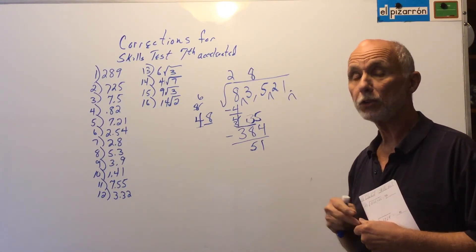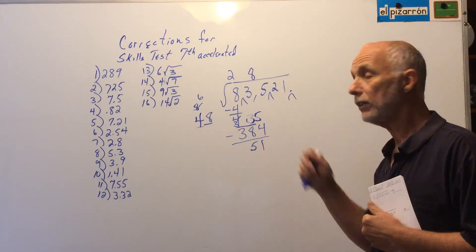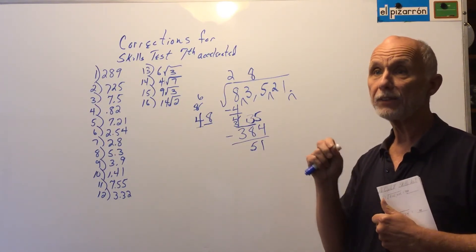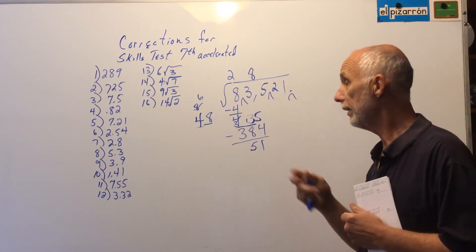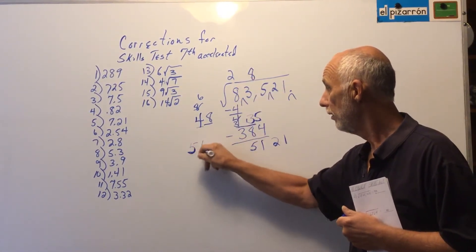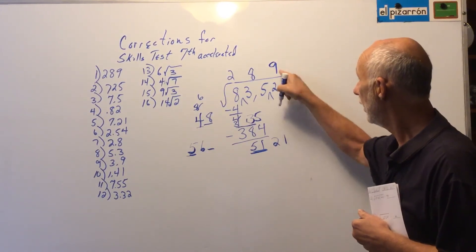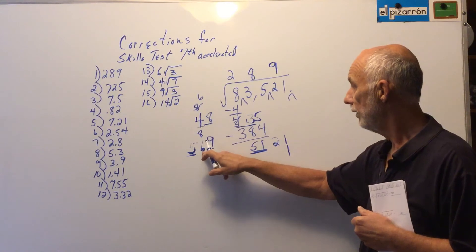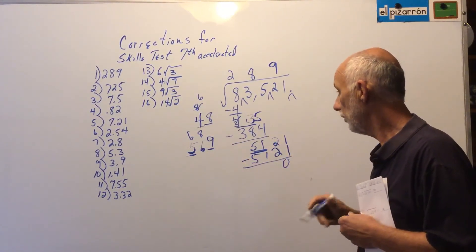Now I understand why James had trouble — this is one of those situations where 9 was too big and 8 is too small, because 51 is bigger than 48. Whenever you have that situation, go with the one that's too small because at least you can subtract and continue the process. Now I bring down the 21, double 28 to get 56 with a blank. 5 goes into 51 — the biggest digit I can use is 9. 9 times 9 is 81, carry 8; 9 times 6 is 54, plus 8 is 62, carry 6; 9 times 5 is 45, plus 6 is 51. I get a remainder of 0.